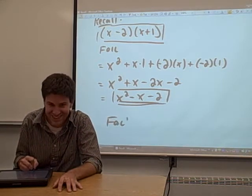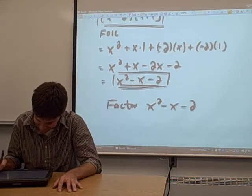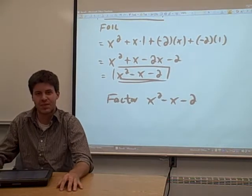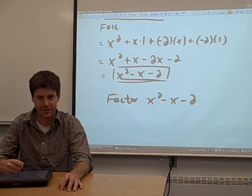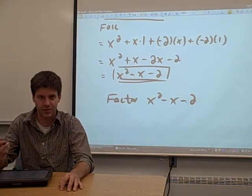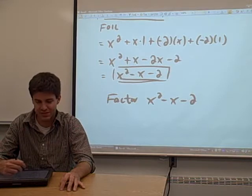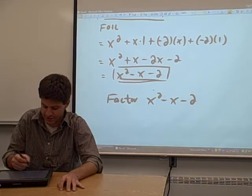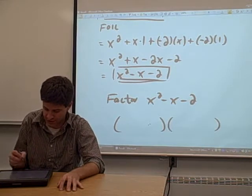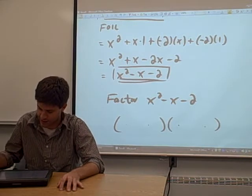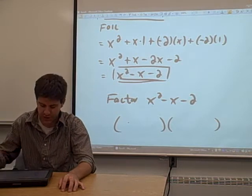We want to factor x squared minus x minus 2. Since this is a trinomial, we know we can't pull anything out of each of these terms, so that's not going to work the way we did it in the last video. We know, because this is a trinomial, that if we factor this, it's going to look like two binomials. The question is, can we figure out what those two binomials need to be?